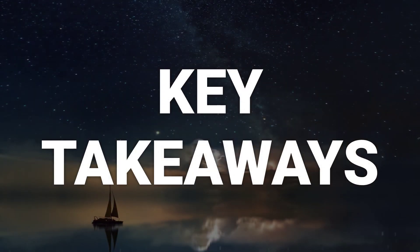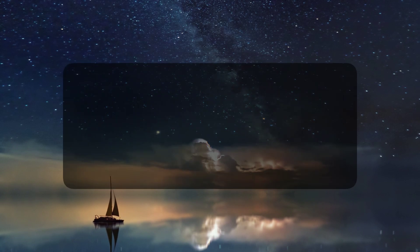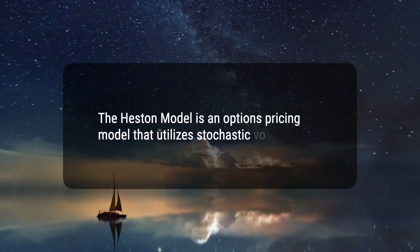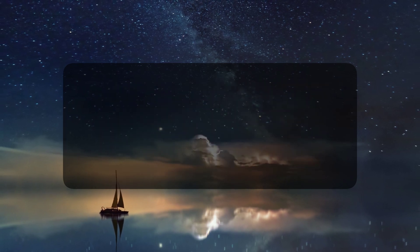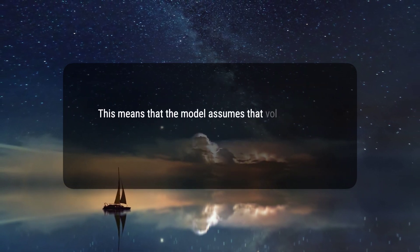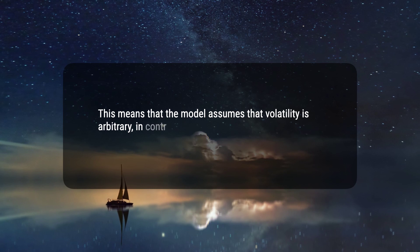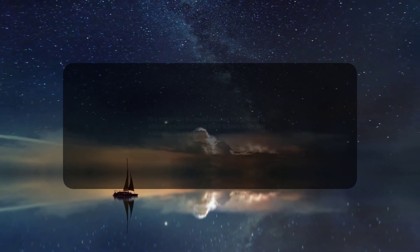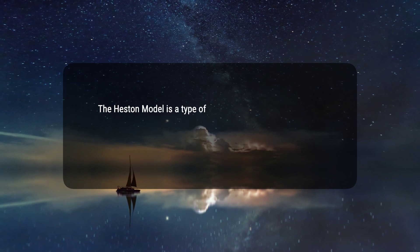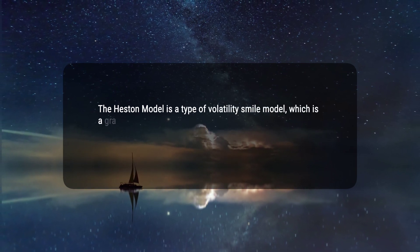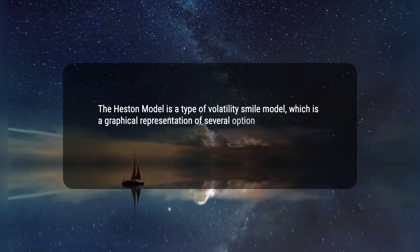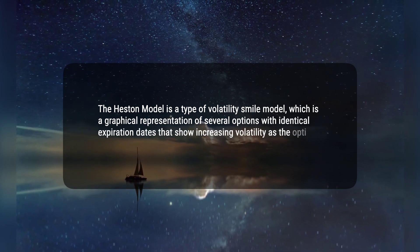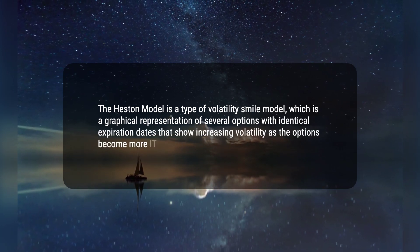Here are three key takeaways. 1. The Heston model is an options pricing model that utilizes stochastic volatility. 2. This means that the model assumes that volatility is arbitrary, in contrast to the Black-Scholes model that holds volatility constant. 3. The Heston model is a type of volatility smile model, which is a graphical representation of several options with identical expiration dates that show increasing volatility as the options become more ITM or OTM.